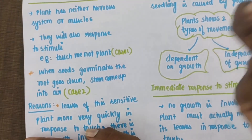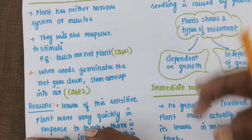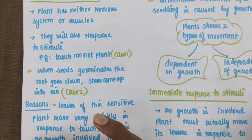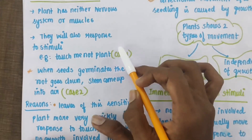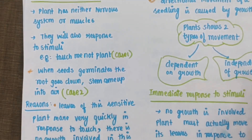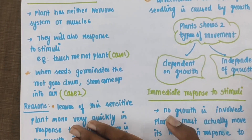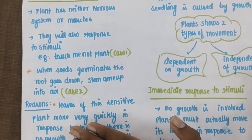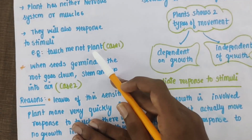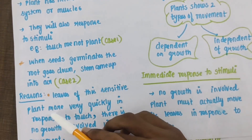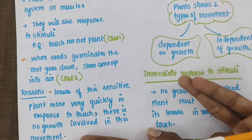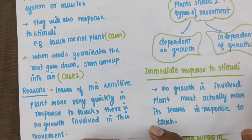If you look at the root and stem — what is the root? What is the stem? These are different kinds of responses. The leaves of the sensitive plant move very quickly in response to touch. There is no growth involved in this movement.